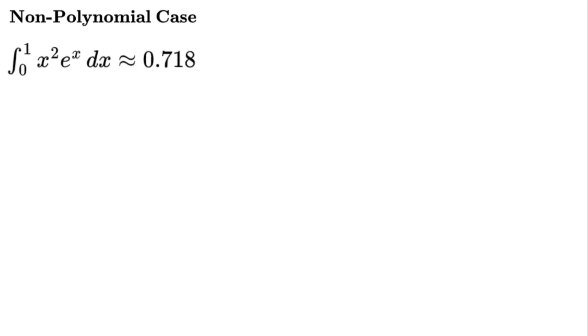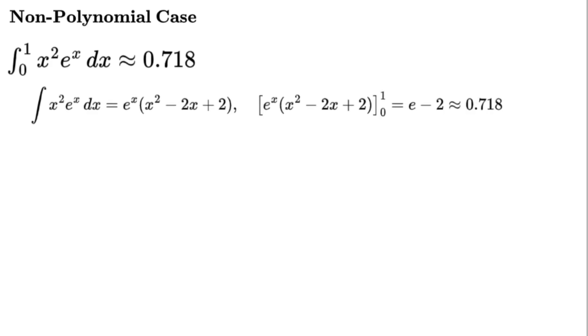Example 2: non-polynomial case. Try the integral from 0 to 1 of x squared times e to the power of x dx, approximately 0.718. Exact: the integral of x squared times e to the power of x dx equals e to the power of x times (x squared minus 2x plus 2) evaluated from 0 to 1 equals e minus 2, approximately 0.718.